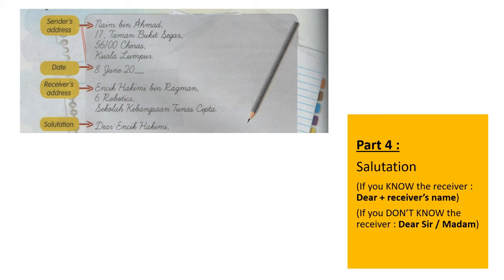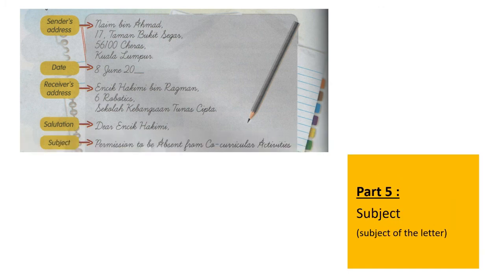Next, salutation. For example: 'Dear Encik Hakimi.' If you know the receiver's name, write 'Dear' and the receiver's name. If you don't know the person, simply write 'Dear Sir' or 'Dear Madam.' Next, write the subject. You have to write the subject of the letter — for example: 'Permission to be absent from co-curricular activity.' If you want to complain, write what you're complaining about — for example: 'Complaint about school toilet.'